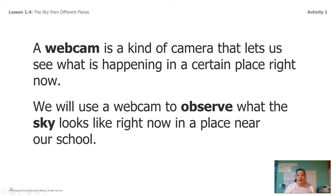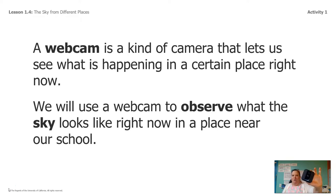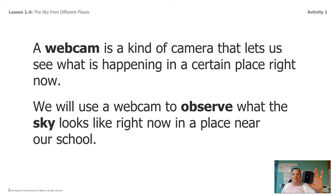So in order to travel all around the world at the same time, we're going to use something called a webcam. This little thing right here is a webcam. And that's how we're going to see what the sky looks like in different places all over the world. You can go on the internet and look up just about any place you want and you can probably find a webcam.